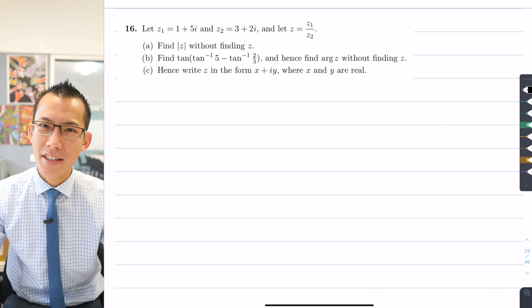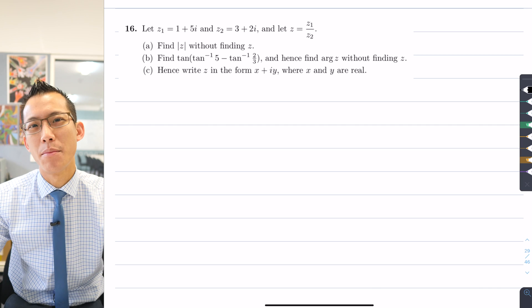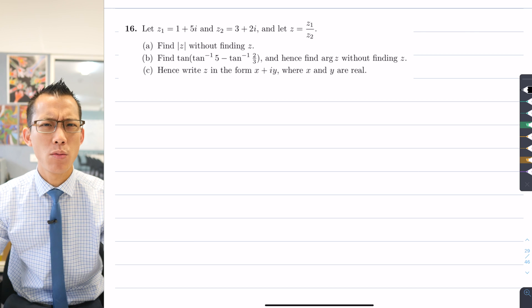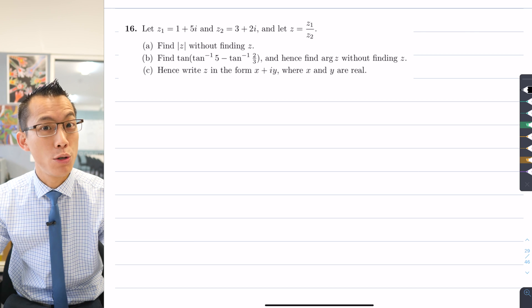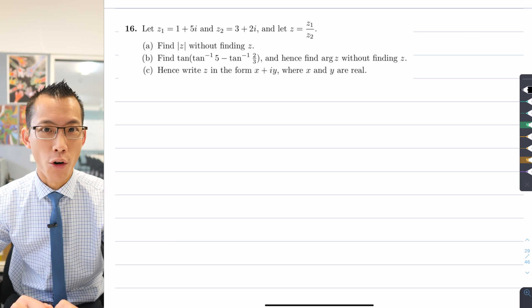Now that we know about rectangular and polar forms of complex numbers, one of the most important things to do is to work out in what circumstances you should use each particular form.